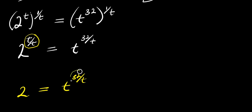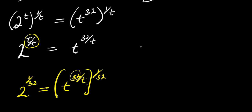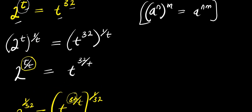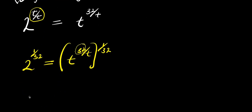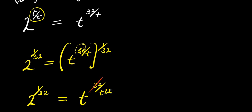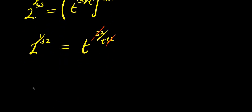The next step is to eliminate this 32, because I want all numbers on one side and the variable on the other. To eliminate the 32, I multiply this exponent by 1 over 32 and do the same on the other side. Applying the same identity, I get 2 power 1 over 32 equals t power 32 over t times 32. The 32 cancels, giving 2 power 1 over 32 equals t power 1 over t.